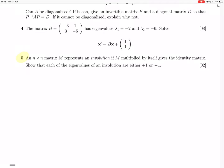Okay, question 5. An n by n matrix M represents an involution if M multiplied by itself gives the identity matrix. So if M times M equals I, we've got to show that each of the eigenvalues of such a matrix M are either plus 1 or minus 1.